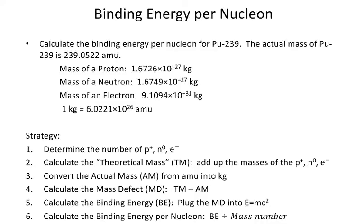In this video, we're going to look at how to calculate the binding energy per nucleon. The example we're going to do is calculate that for plutonium-239. They've given us a fair amount of information: the actual mass of plutonium-239, the mass of a proton, a neutron, and an electron, and the conversion factor between kilograms and AMUs.